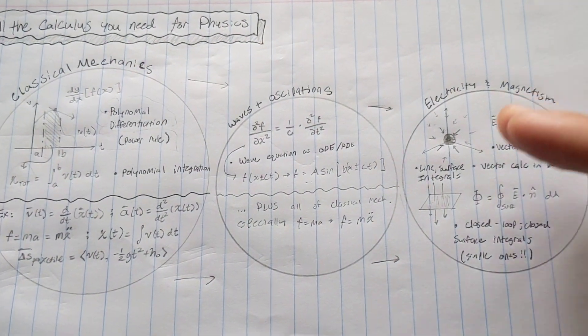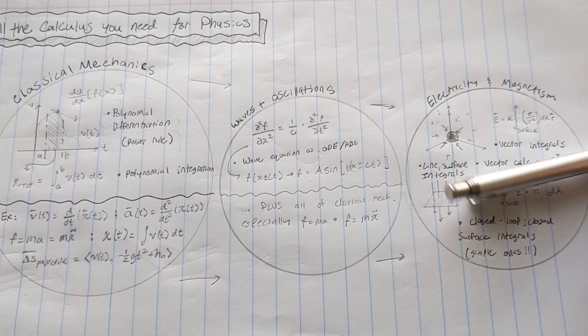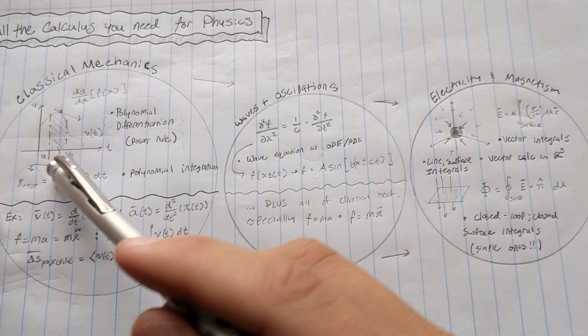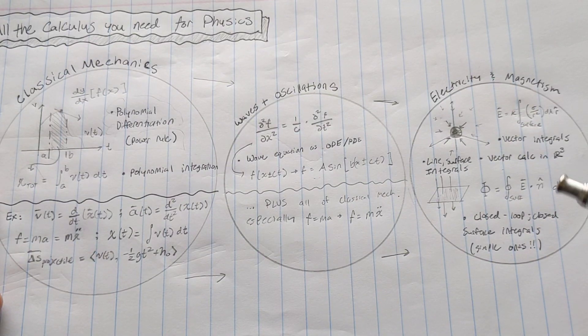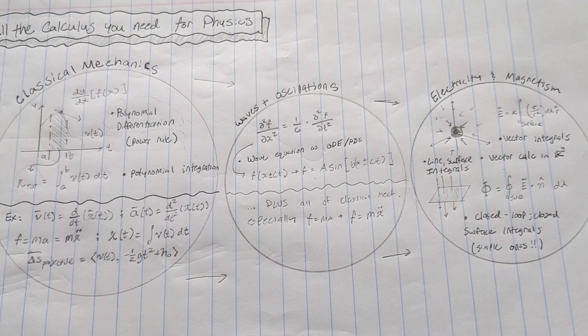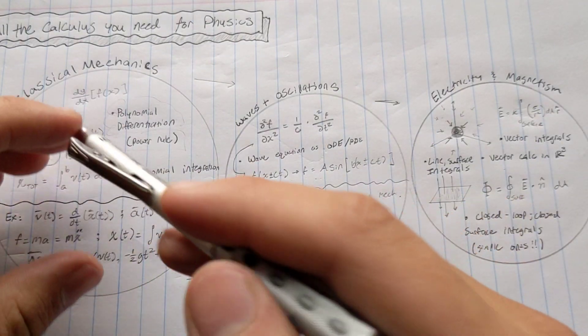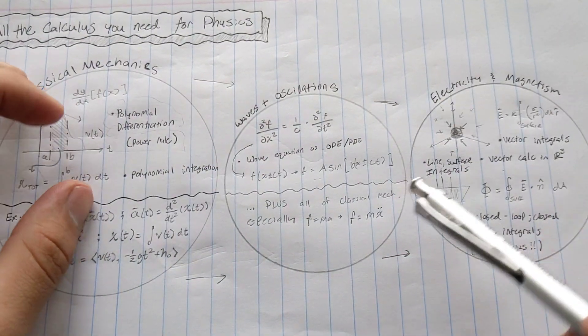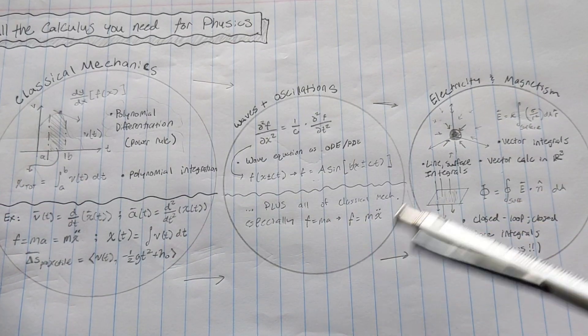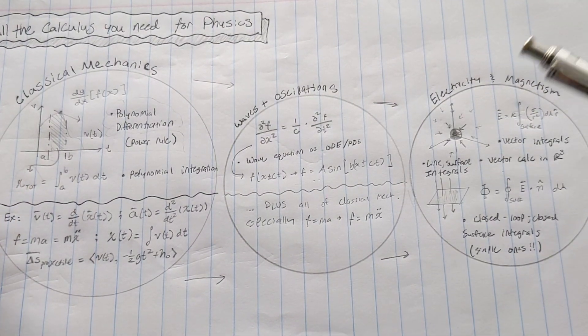This is a map of all the calculus you learn as you go through physics. You could look at this as all the calculus and math you should know going into physics, but I prefer to see it as all the math that you learn in your journey of physics, because you don't learn all the math and then do all the physics. You learn the physics, and as you go along, you find that you need more and more math.